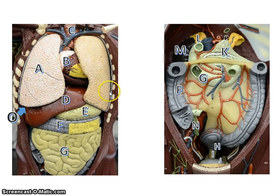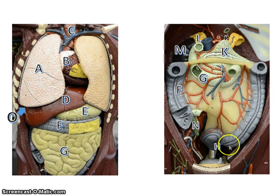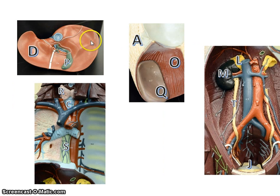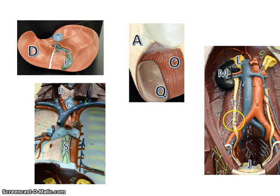One more time: lungs, heart, trachea, liver, stomach, large intestine, small intestine, diaphragm, large intestine, rectum, anus, bladder, appendix, small intestine, adrenal gland, kidney, pancreas, liver, gallbladder, thyroid gland, trachea, esophagus, left lung, diaphragm, spleen, adrenal gland, kidney, ureter, bladder. Again, review these and take the practice test. You're also responsible for what systems they are part of, so make sure you review that also.